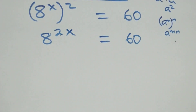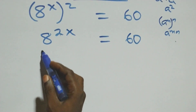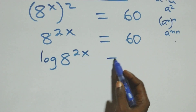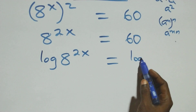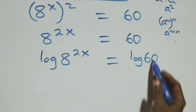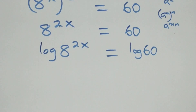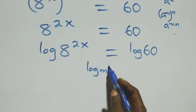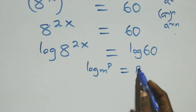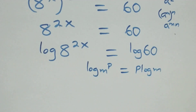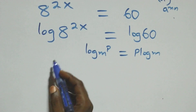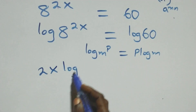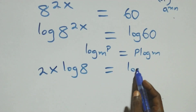The next step: we take the log on both sides. We have log of 8 raised to power 2x equals log 60. We apply the power rule of logarithm: log m raised to power p is the same thing as p times log m. So this becomes 2x log 8 equals log 60.